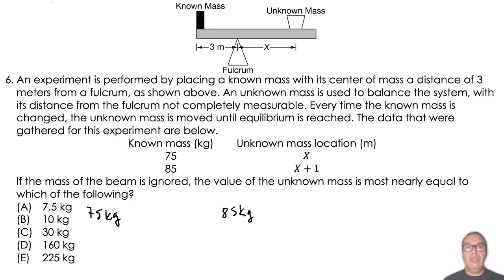Let us denote the unknown mass by M. In the first case, equilibrium of torques is given by the equation 75 kilograms times G times 3 meters is equal to M times G times X meters.